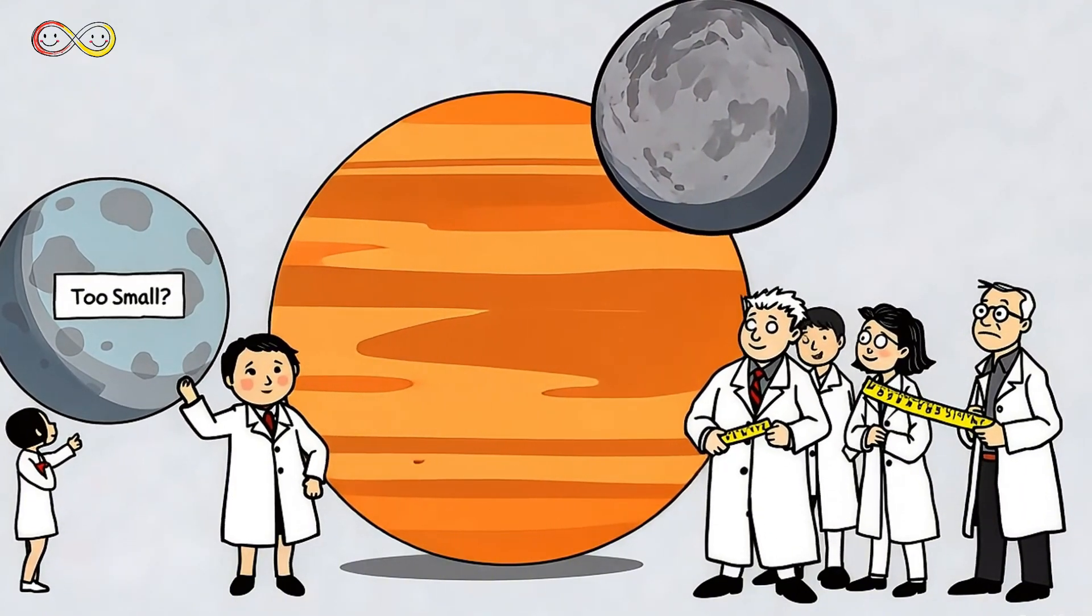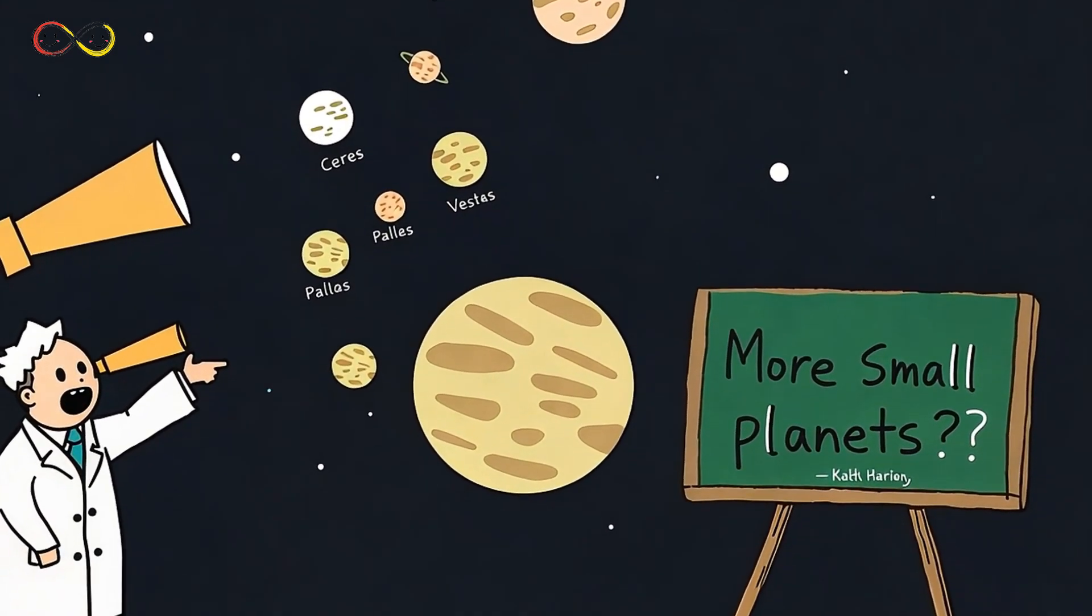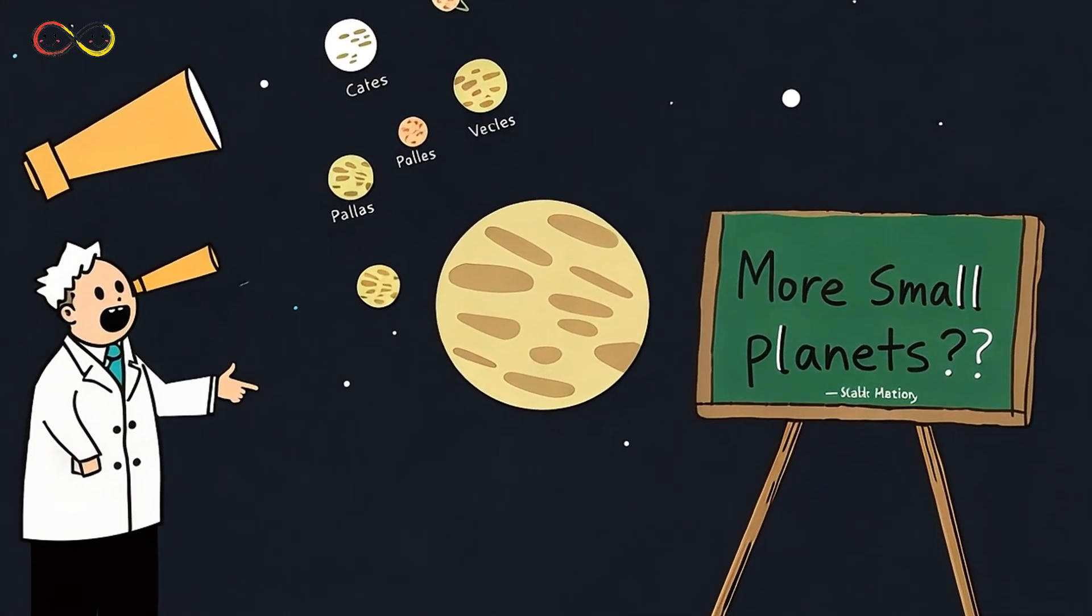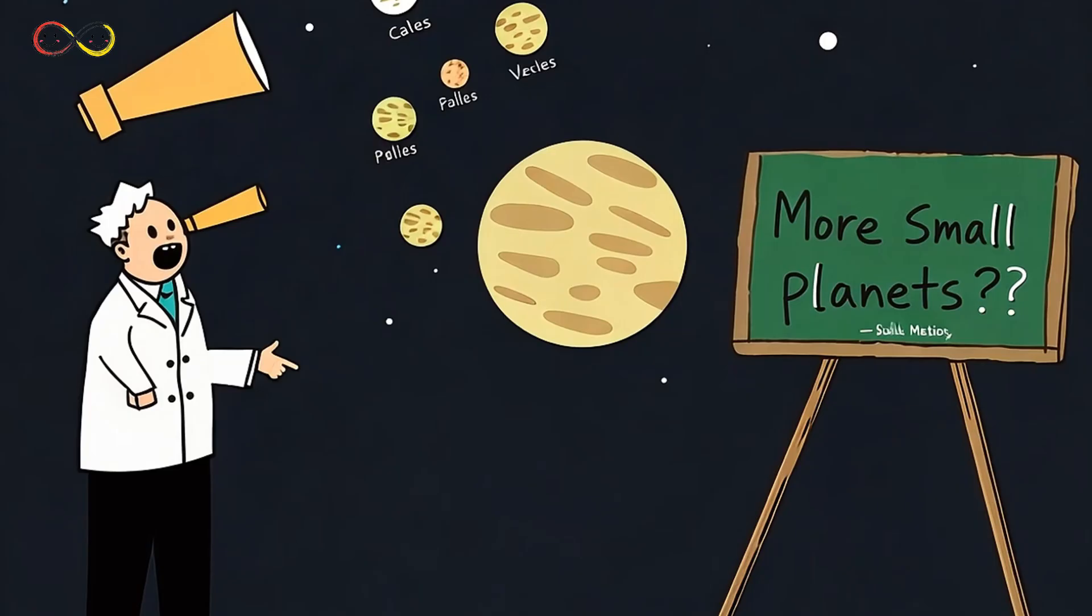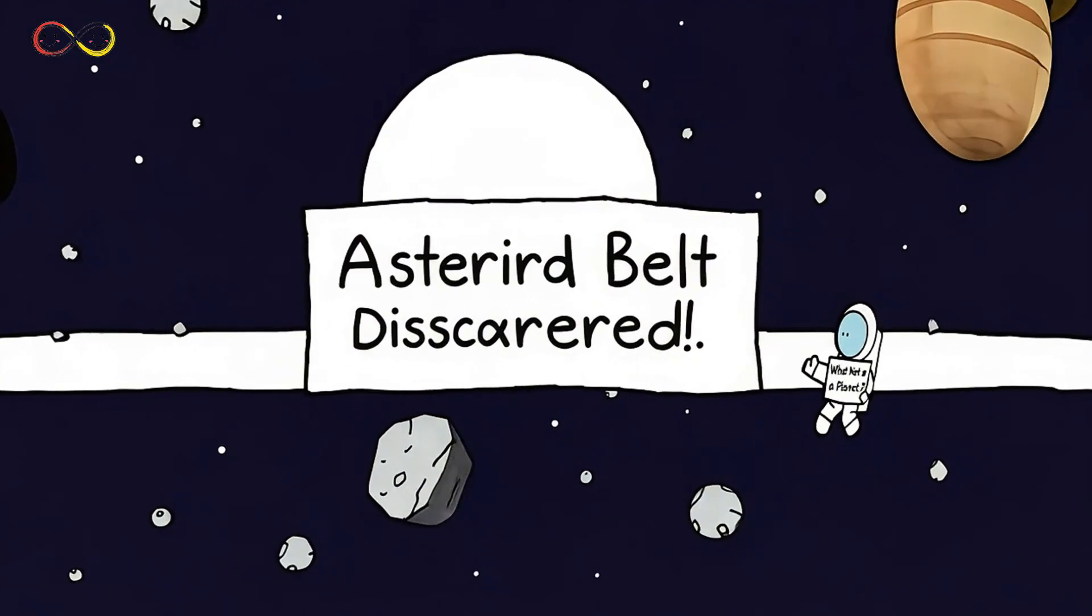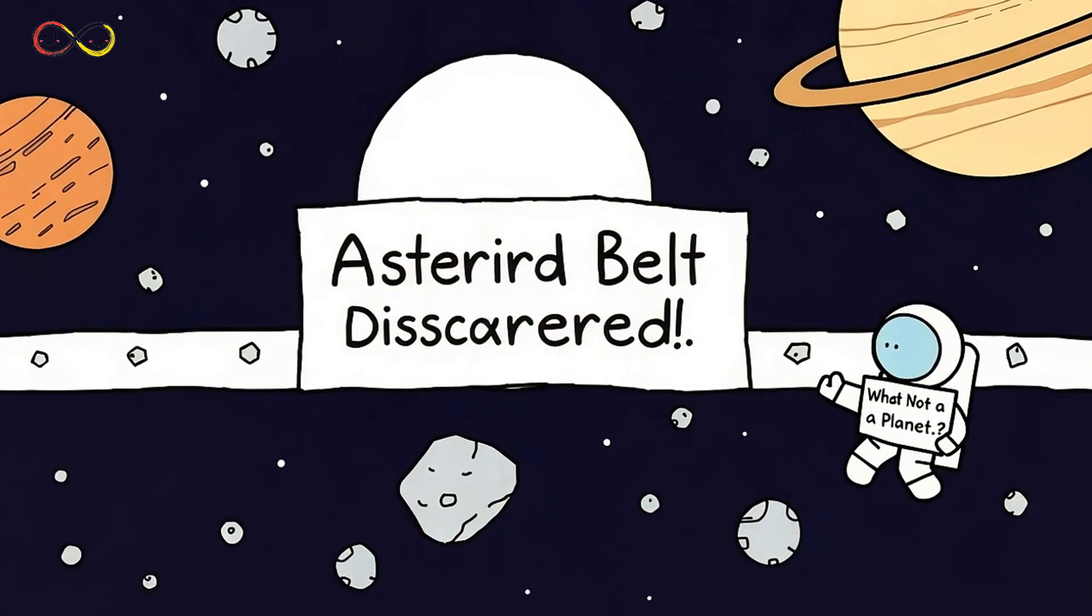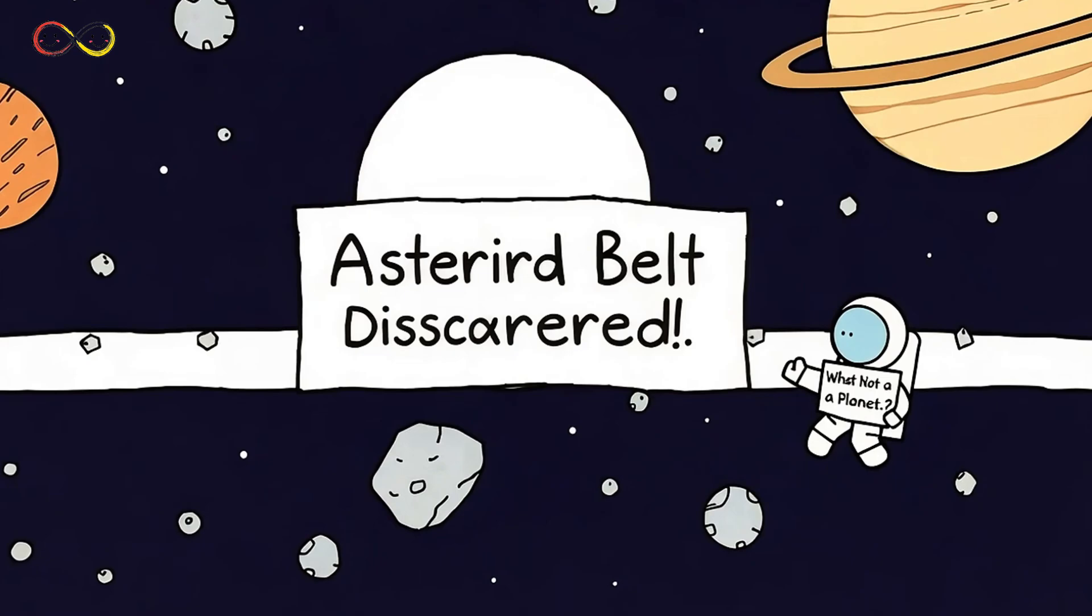Then something unexpected happened. More small objects like Ceres were found. One by one, scientists spotted more tiny celestial bodies in the same region. Instead of one big planet, they had discovered many small ones. Scientists soon realized that these tiny objects formed a whole belt between Mars and Jupiter. This became known as the asteroid belt. The missing planet wasn't missing at all. It had never existed.